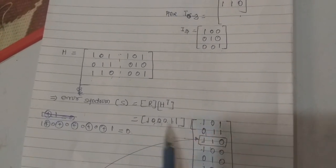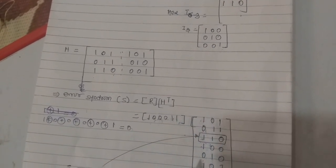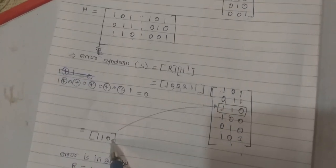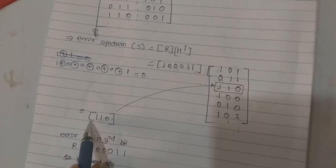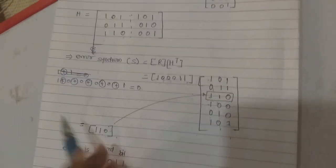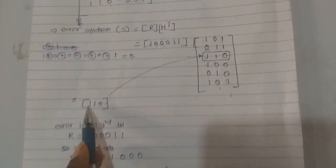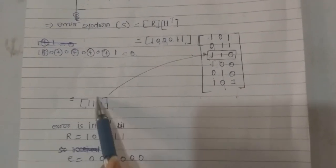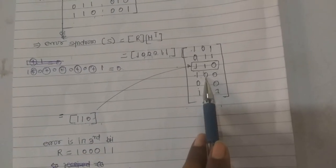In this way you can calculate the code vector and calculate the code. 0 is placed here, 1 and 1. So you will get 1, 1, 0. If the syndrome is like this, 1, 1, 0, check the position of the syndrome in the H transpose matrix.